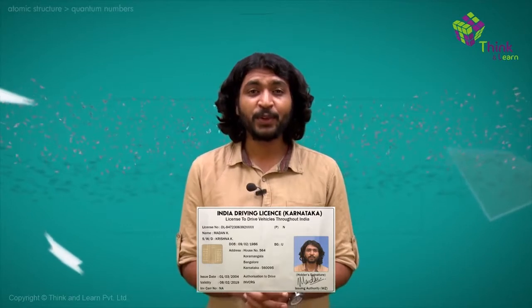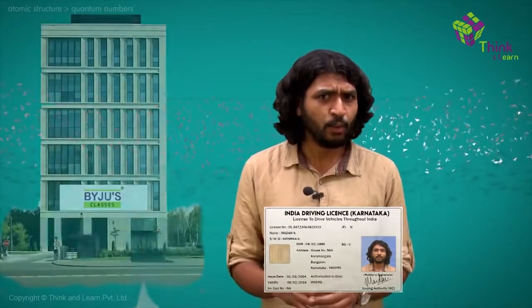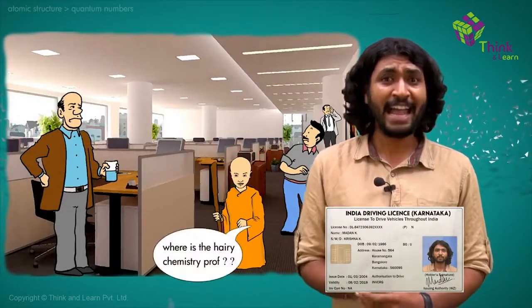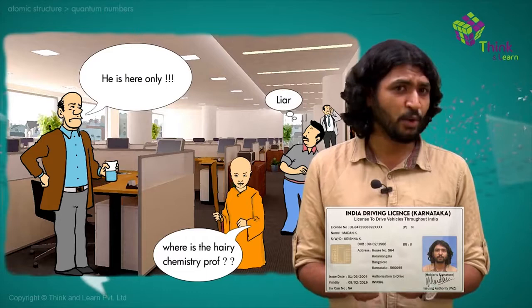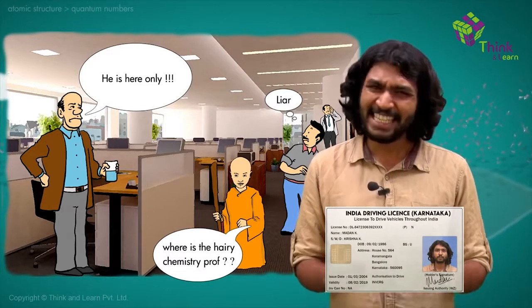I want to show you something — that's my driver's license on the screen. You have my photograph, my name, my address. Now, if I ask you to find and locate me, you'd go to that address. But would you find me there? Most likely not. You'd go to Baiju's classes and ask where is that hairy chemistry professor. But are you 100% sure you can find me there? No. Just like that, quantum numbers give us the address of an electron — not always accurate, but the most probabilistic location for finding an electron around an atom.